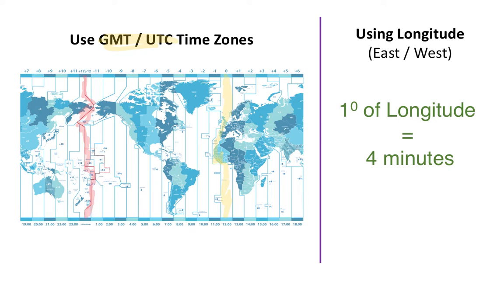If we're going from a positive time zone to a negative time zone, we're going to go back a day. If we're going from a negative time zone to a positive time zone, we're going to gain a day. We can also calculate the time difference based on the longitude of the two locations — one degree of longitude is equal to four minutes, and that tells us the time difference between those two locations.